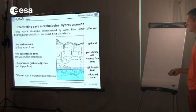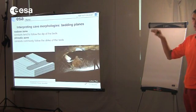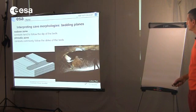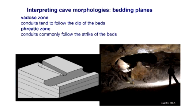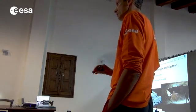These are typical shapes of galleries. In the vadose zone, where the water trickles and forms sheets going down, typically the conduits — the cave passages — follow the dip of the beds. That's quite typical. So if you have a cave where the bedding is clearly visible and you see that the cave follows this dip, you know it's a cave that formed above the water table, for sure.